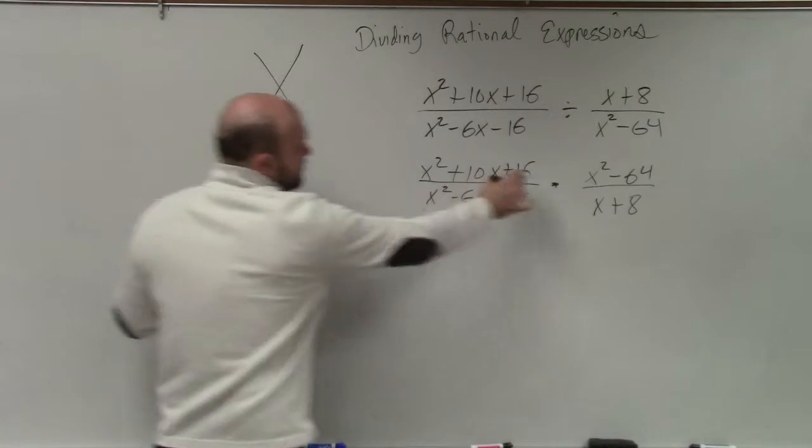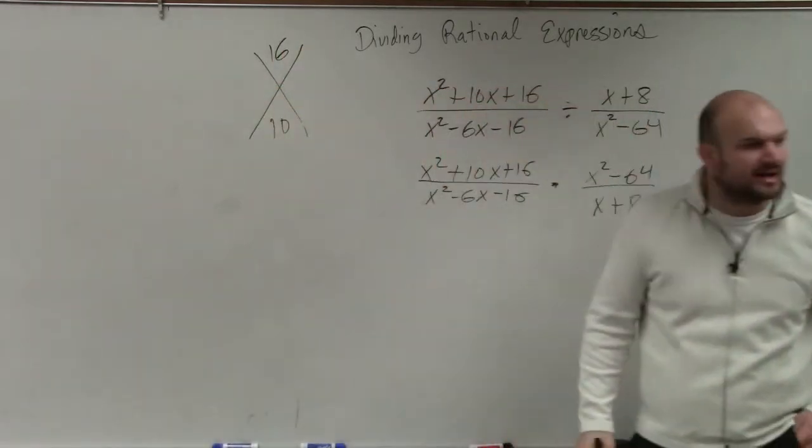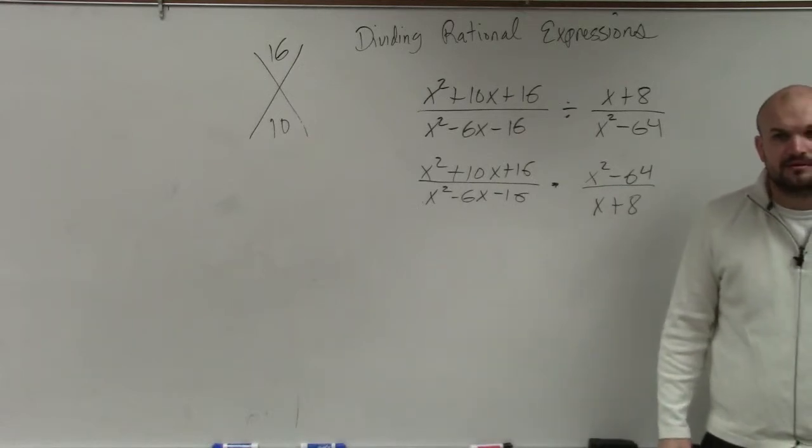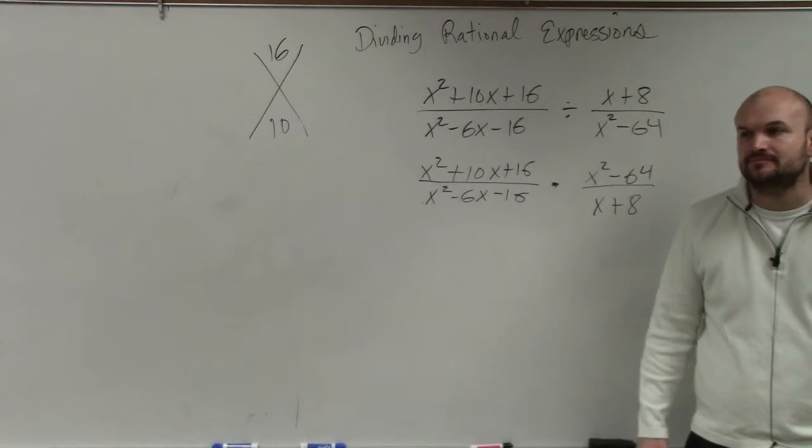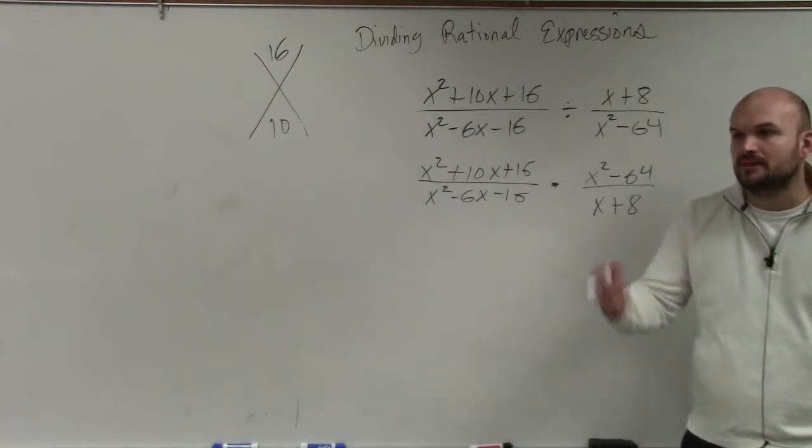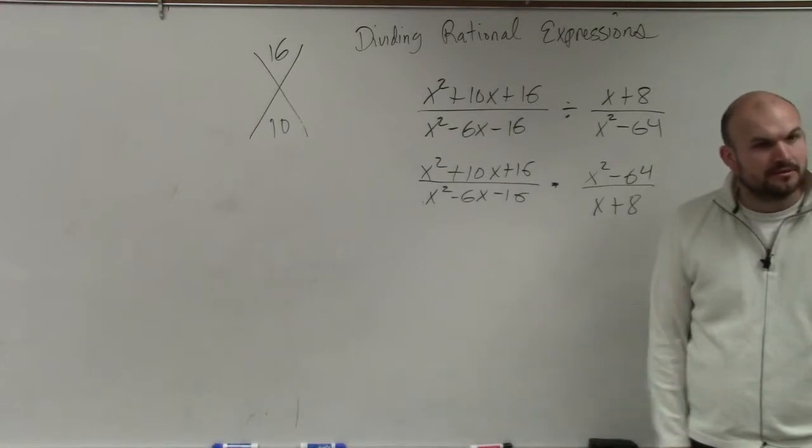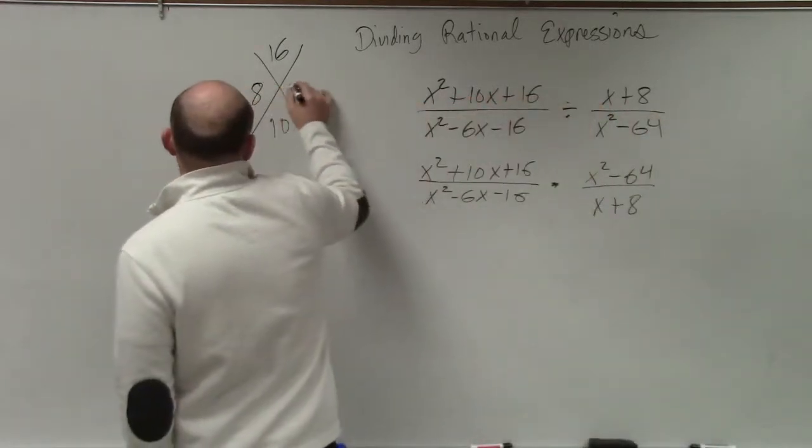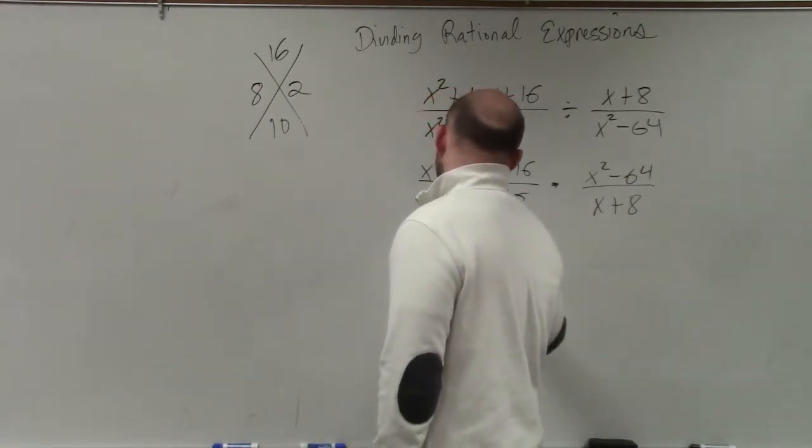We just go to each one. So the first one, I do 16 and 10. What two numbers multiply to give me 16 but add to give me 10? You should be writing this down. What two numbers multiply to give me 16, add to give me 10? 8 and 2. So therefore the top equation can be factored as x plus 8 times x plus 2.